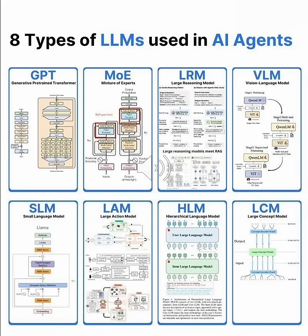Ever wonder what's really powering AI agents? It's not just one type of AI model — it's eight different architectures, each with unique superpowers. Let's decode the LLM universe in three minutes.